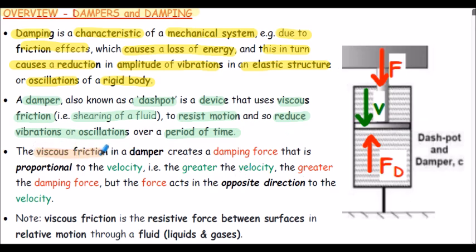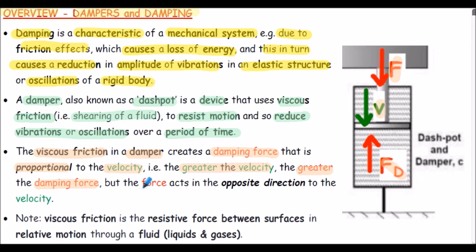The viscous friction in the damper creates a damping force that's proportional to the velocity. In other words, the greater the velocity, the greater the damping force. So in our sketch on the right-hand side, we have an applied force F to the dashpot that generates a velocity in the dashpot, which is related to the damping force generated by the dashpot. Notice that the damping force acts in the opposite direction to the velocity, as shown on our diagram.